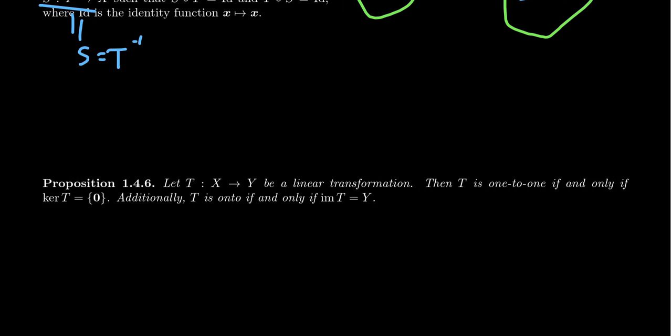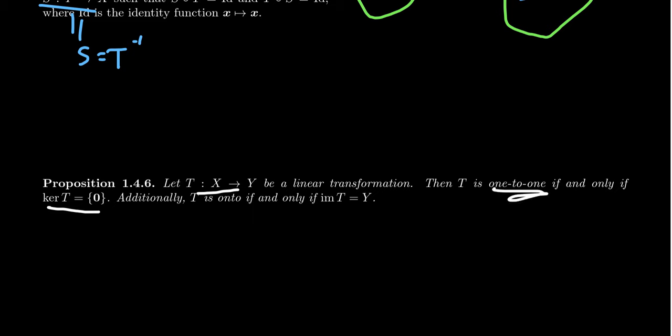Here's a proposition: a linear transformation T from X to Y is going to be one-to-one if and only if the kernel is just the zero vector. Every linear transformation will map the zero vector to the zero vector, but a one-to-one map means that the only thing that maps to zero is the zero vector itself. If your map is one-to-one, no two vectors can go to the same spot. Since the zero vector already maps to the zero vector, the one-to-one condition forbids anyone else from going there. And if the only vector mapping to zero is itself zero, then every other vector will also be unique in its image, so it's one-to-one.